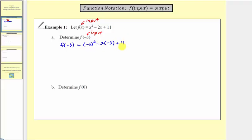Now we simplify the right side, and this will give us the function value, or the output, when the input is negative three. Following the order of operations, we would simplify the exponents first. Negative three squared is nine, so we have nine minus two times negative three plus 11.